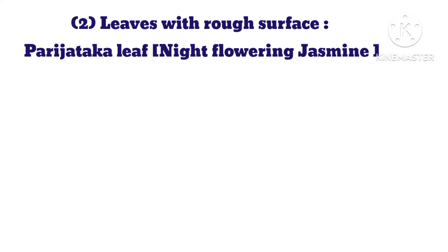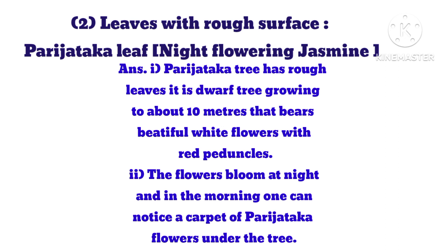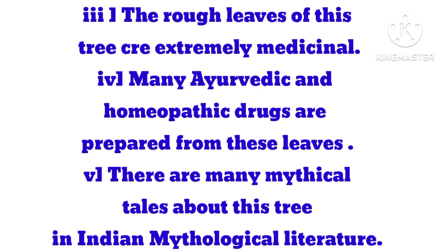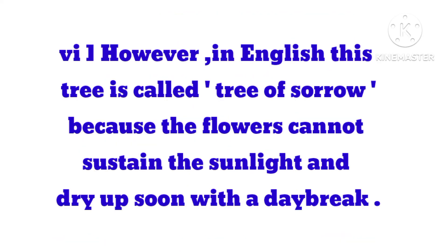Leaves with rough surface — Parijatak leaf (Night flowering jasmine). Answer: 1. Parijatak tree has rough leaves. It is a dwarf tree growing to about 10 metres that bears beautiful white flowers with red peduncles. 2. The flowers bloom at night, and in the morning one can notice a carpet of Parijatak flowers under the tree. 3. The rough leaves of this tree are extremely medicinal. 4. Many Ayurvedic and homeopathic drugs are prepared from these leaves. 5. There are many mythical tales about this tree in Indian mythological literature. In English, this tree is called the tree of sorrow because the flowers cannot sustain sunlight and dry up soon after daybreak.